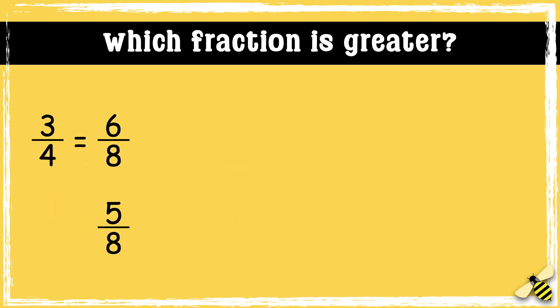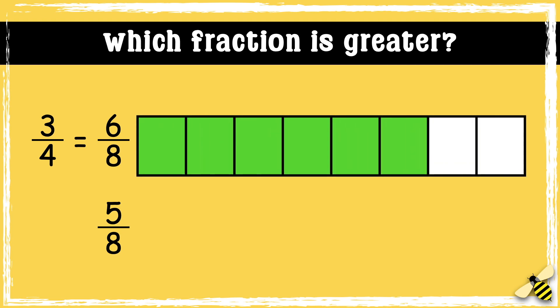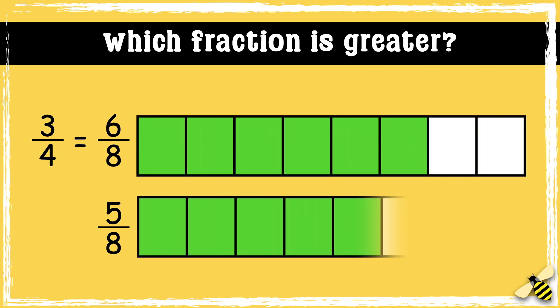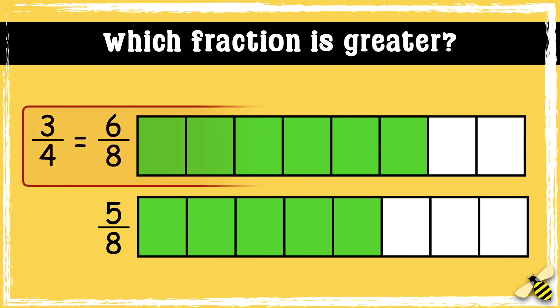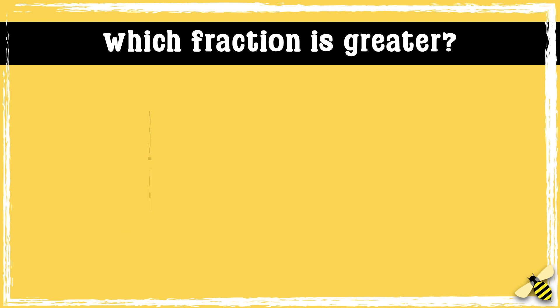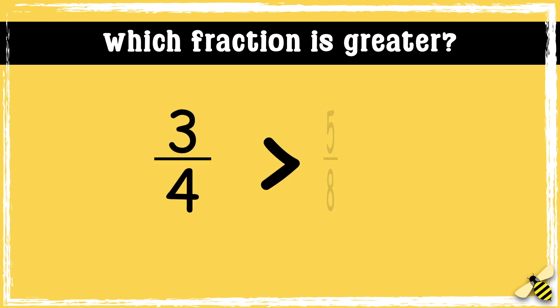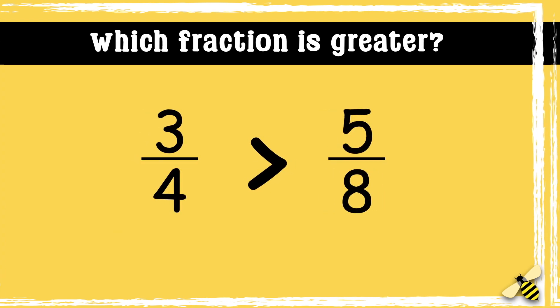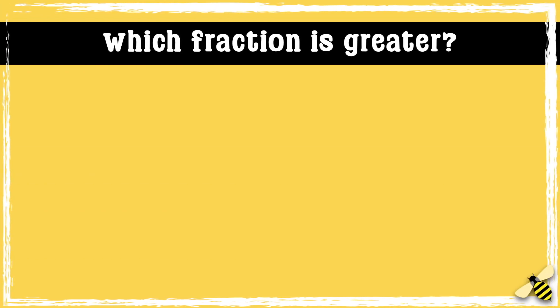Now that the denominators are the same we can compare the fractions. Let's have a look at these fractions side by side: we have 3 quarters or 6 eighths, and 5 eighths. We can see that 6 eighths is greater than 5 eighths, which means 3 quarters is greater than 5 eighths.